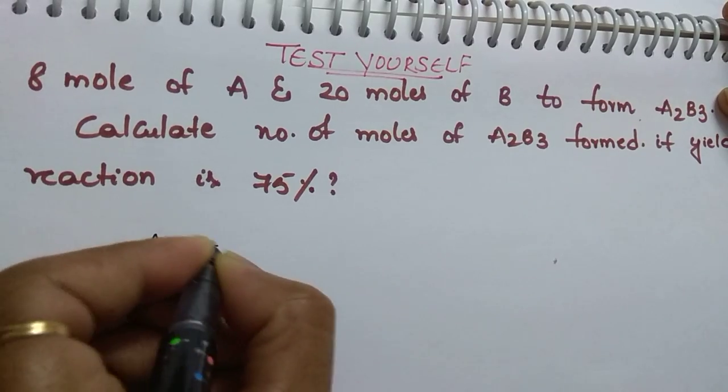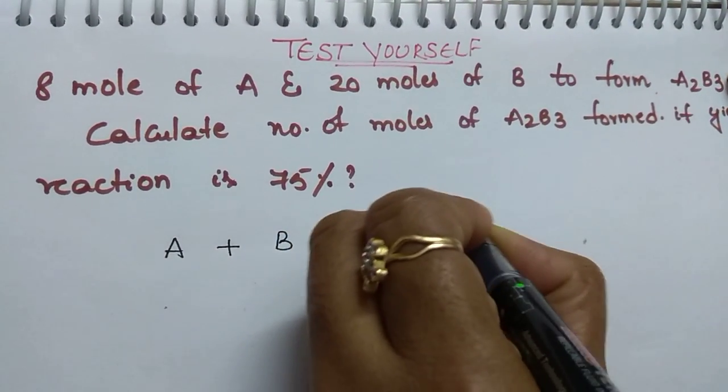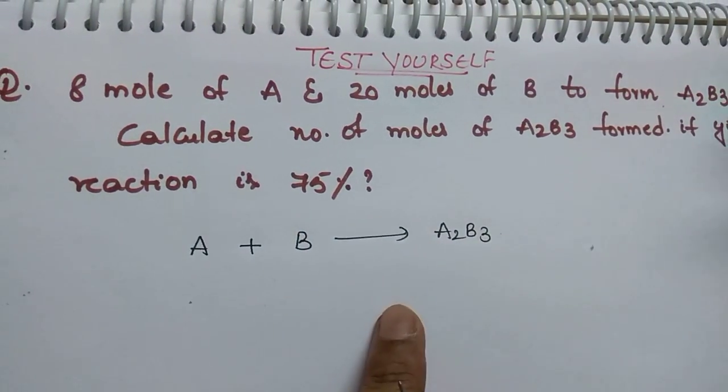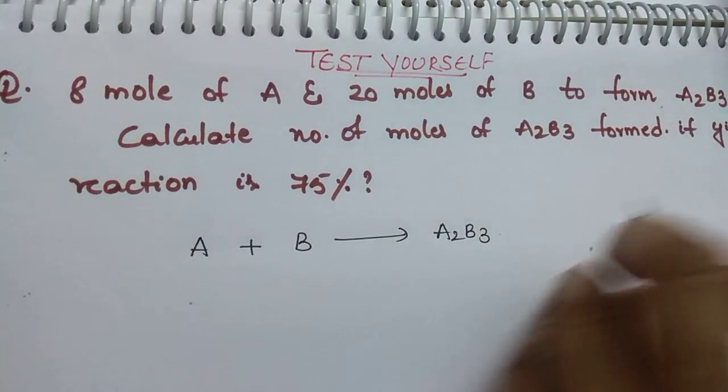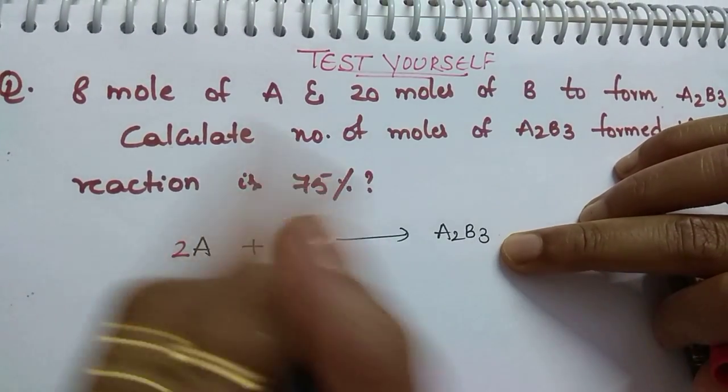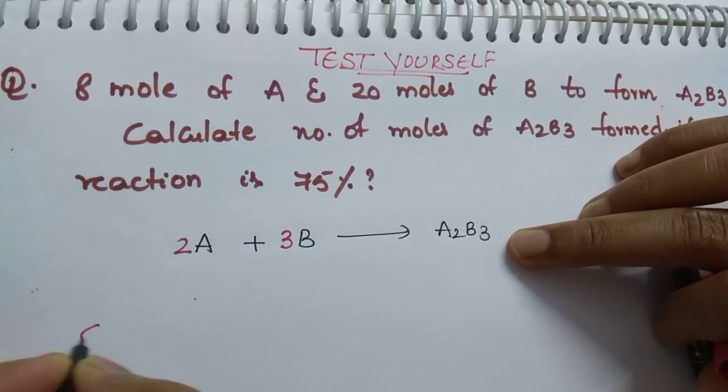First, write the reaction: A + B → A2B3. Now balance this equation. How many A's are there? 2. And B? 3. So the stoichiometric coefficients are 2, 3, and 1, giving us 2A + 3B → A2B3.